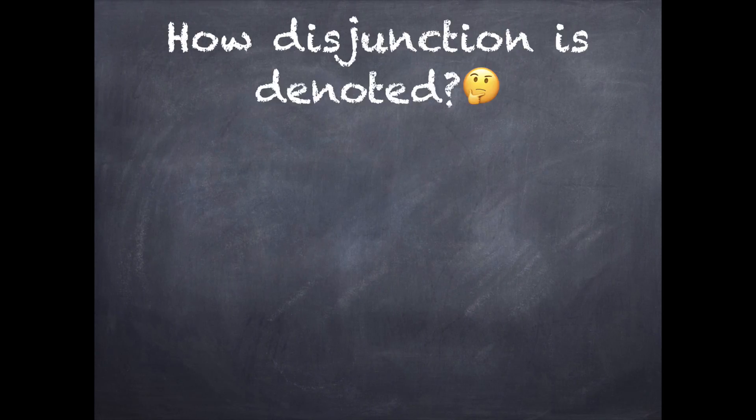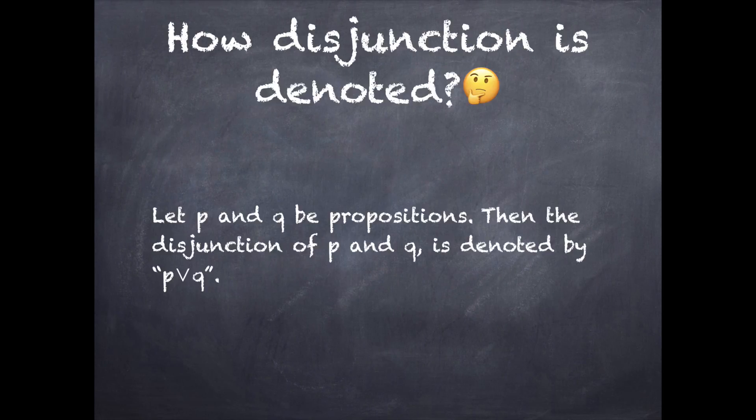How is disjunction denoted? Let p and q be propositions, then the disjunction of p and q is denoted by p OR q.